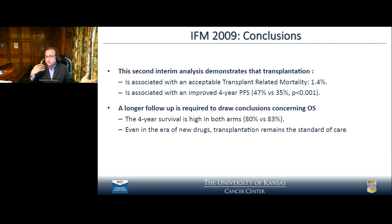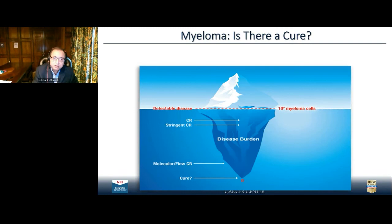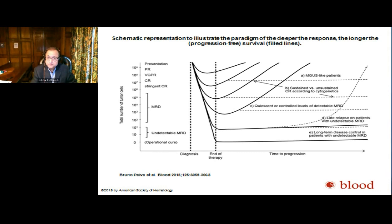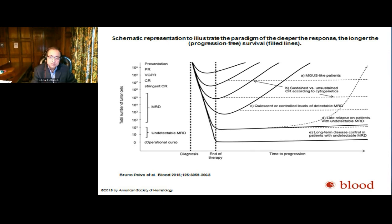Another key finding: MRD negativity matters. If somebody is MRD-negative, their progression is far less compared to somebody who is still MRD-positive. With transplant, the chance of achieving MRD negativity is higher than without. I am a proponent that if somebody is transplant eligible, they should undergo transplant now rather than delay, because delay may mean the disease mutates, gets more resistant, and many patients never get to transplant. If transplant eligible, go for the transplant.